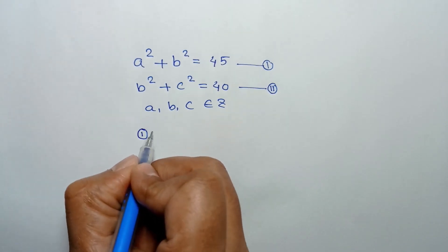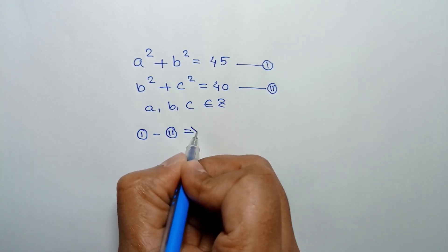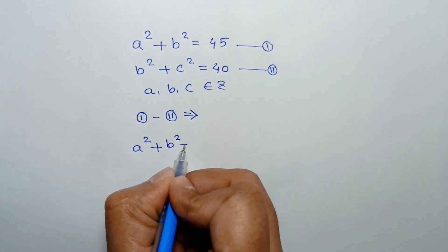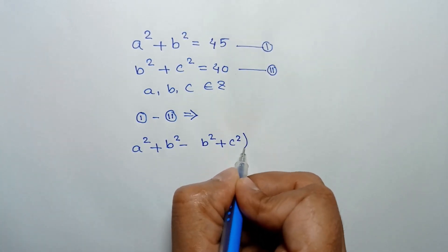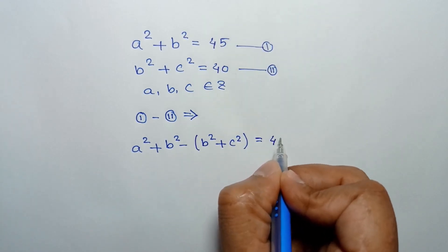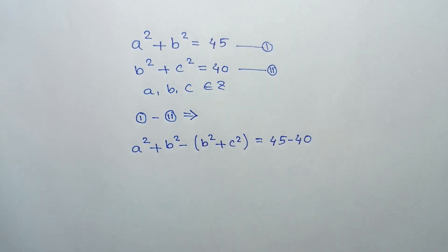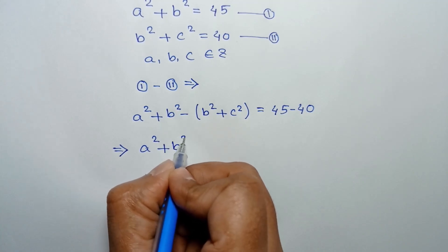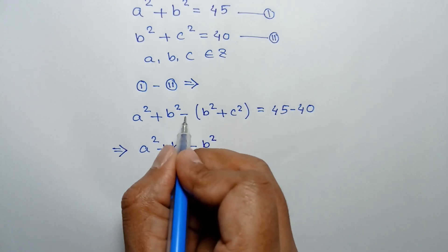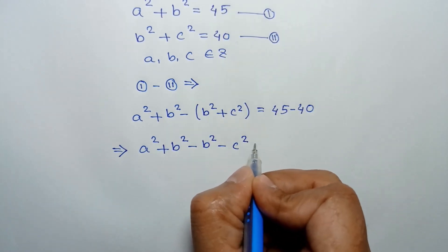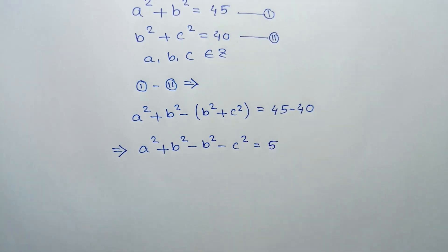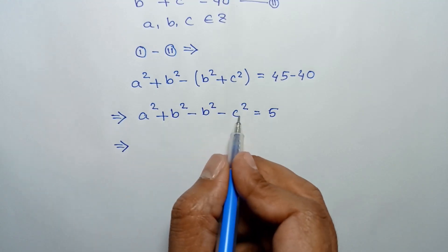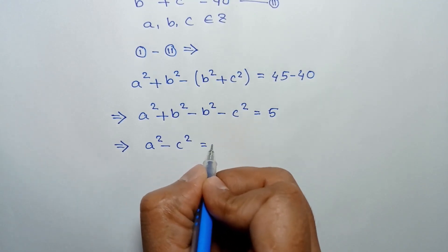If we subtract equation two from equation one, we can write a squared plus b squared minus b squared plus c squared, which equals 45 minus 40. The b squared terms cancel out, so we get a squared minus c squared is equal to 5.